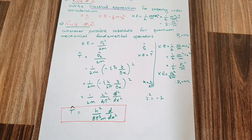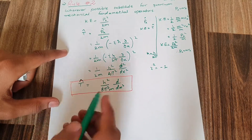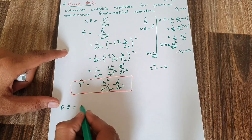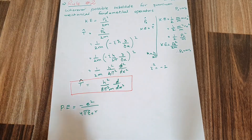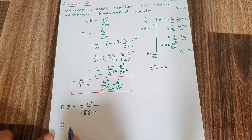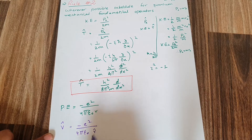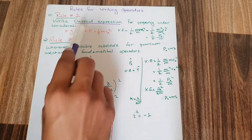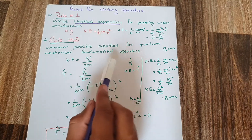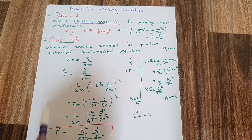If I want to write the operator for potential energy, first I write the classical expression: potential energy equals minus e squared divided by 4 pi epsilon-naught r. To represent it as an operator, the potential energy operator V-cap equals minus e squared divided by 4 pi epsilon-naught r-cap. These are the two rules for writing operators: first write the classical expression, then substitute the operator values.